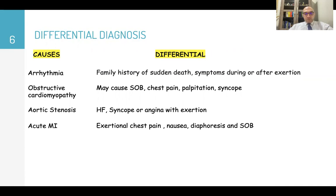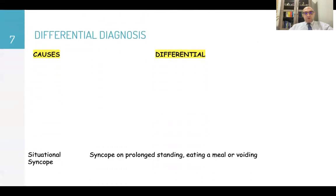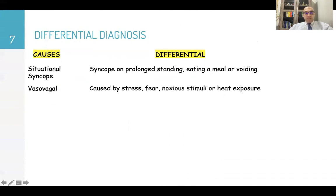Acute myocardial infarction typically occurs during exertion with chest pain, nausea, diaphoresis, and shortness of breath. Carotid sinus hypersensitivity: head rotation or pressure on the carotid sinus — like during shaving or wearing a tight collar — can reproduce symptoms. Situational syncope occurs with prolonged standing, eating a meal, or voiding. Vasovagal syncope is caused by stress, fear, anxious stimuli, or heat exposure.